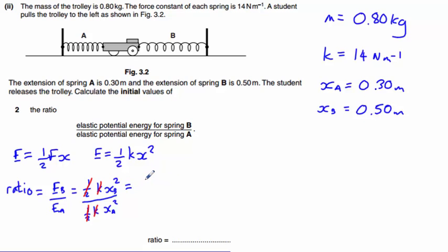So that will be 0.5 squared divided by 0.3 squared, which is 2.78.